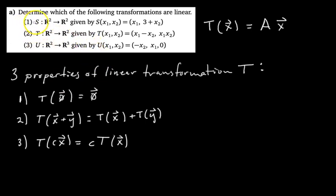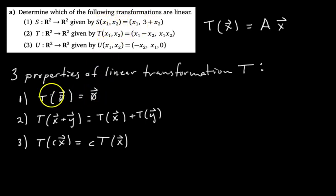For this first transformation S, it takes vectors in R2, transforms them into output vectors in R2. The output vector has components X1 and 3 plus X2, where X1 and X2 are the components of your input vector. Let's check this first condition — spoiler alert, it's going to fail.